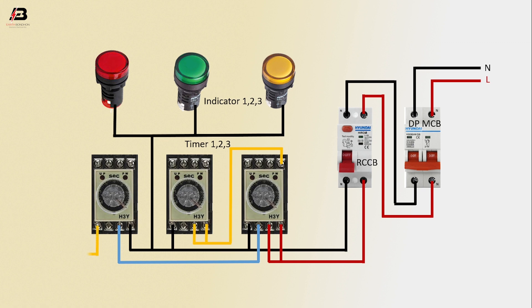Output connection from timer 1 to lamp, output connection from timer 2 to indicator lamp 2, output connection from timer 3 to indicator lamp 3. Now this circuit is ready for use.